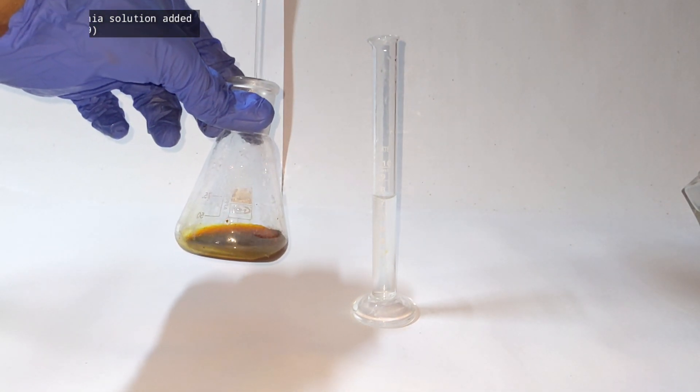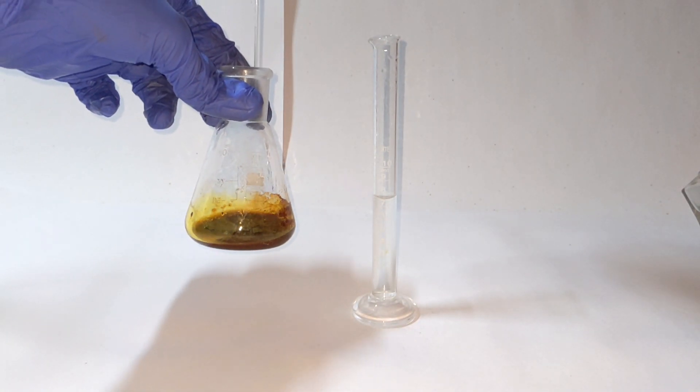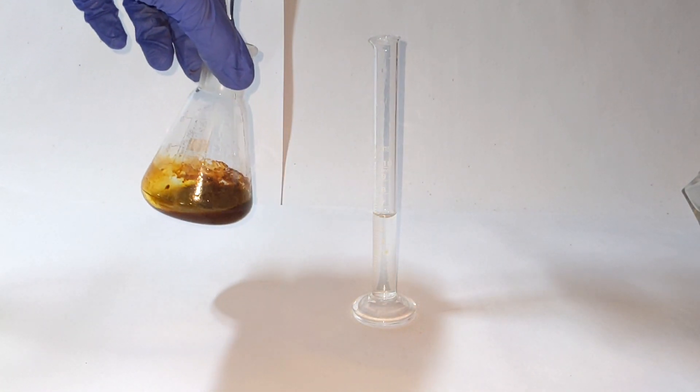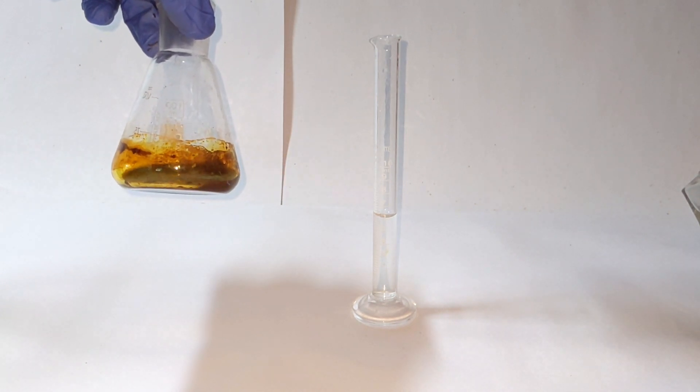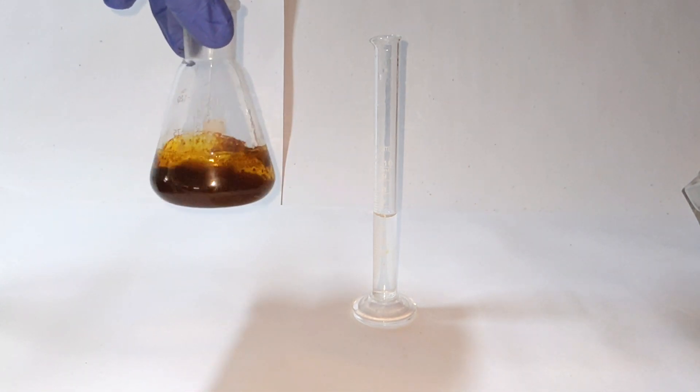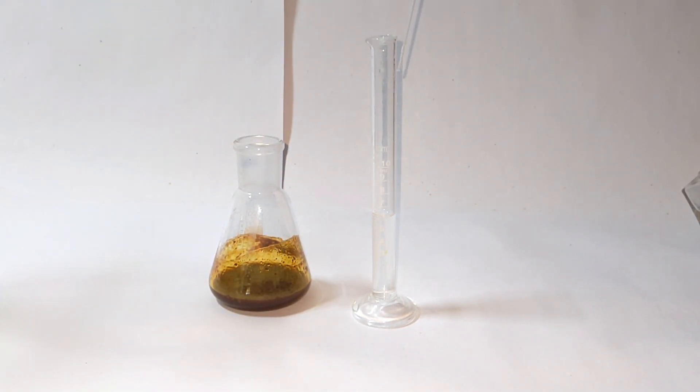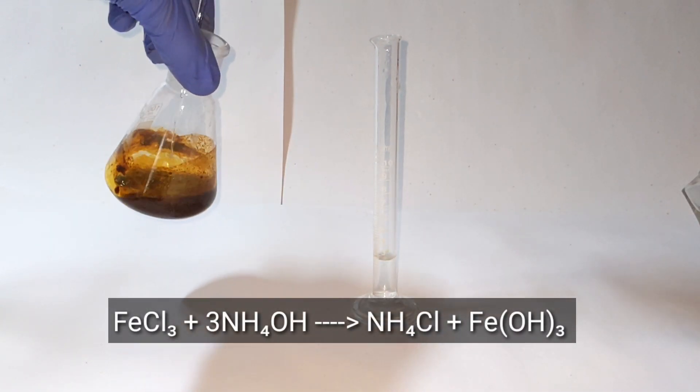Then 10 milliliters of the 0.89 specific gravity ammonia solution was added. It should be noted that before adding the ammonia solution, the flask should be cold enough to prevent ammonia from escaping. Add ammonia slowly with a dropper, frequently shaking the contents of the flask. You see the formation of a brown colored precipitate.